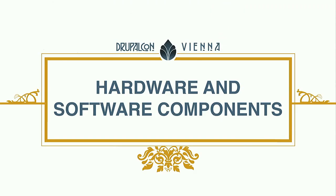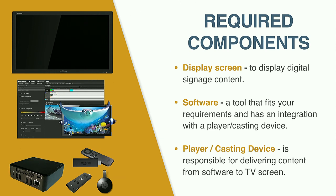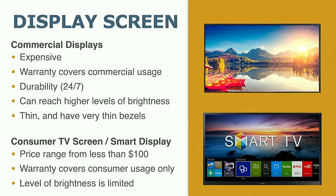Now I'd like to talk about the components we use to build digital signage for YMCA, and what you'll need if you're interested in building your own solution. For any digital signage solution we need three main components: a display screen, software to manage content displayed on screens, and a player or custom device to connect the display with the software. Two other important components are the content itself, and a content editor or administrator — one person or a group — who prepares content and schedules. Good content is very important for any digital signage. There are no strong requirements for a display screen — a simple TV screen with HDMI output is enough.